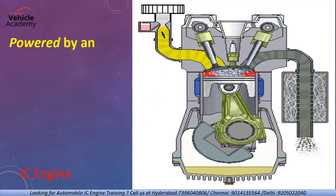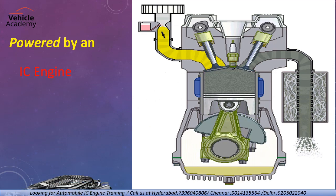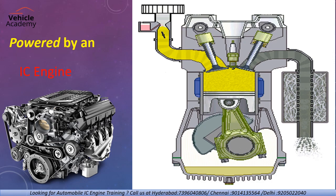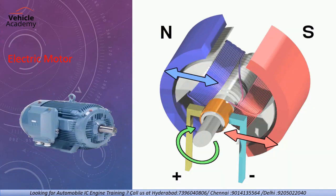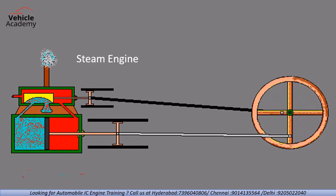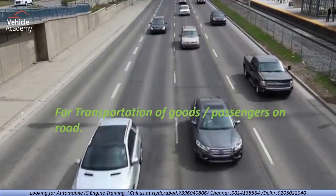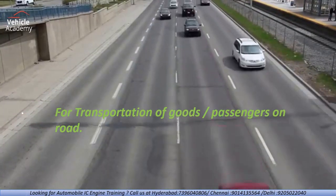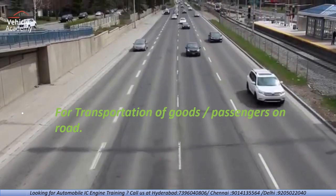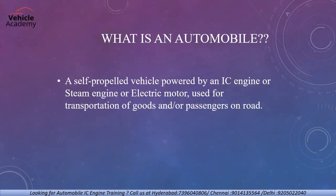A self-propelled vehicle powered by an IC engine, electric motor, or steam engine for transportation of goods or passengers on road is called an automobile. A vehicle powered by an IC engine, steam engine, or electric motor used for transportation of goods and passengers on road — that is called an automobile.